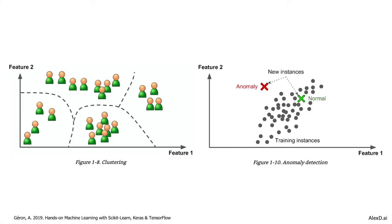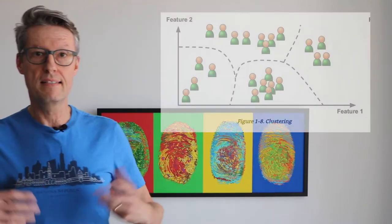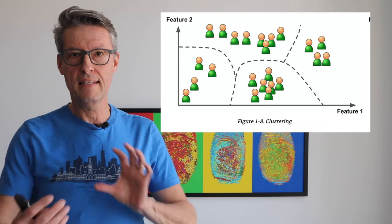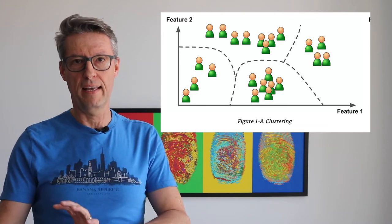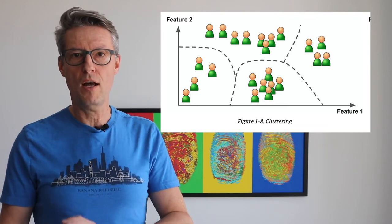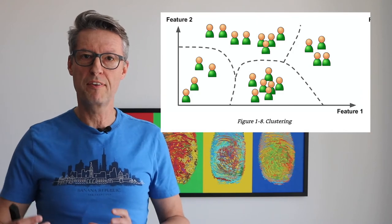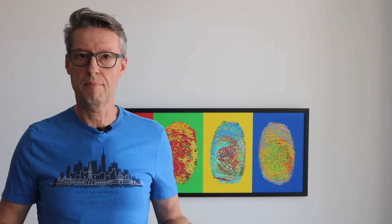Let's use two different examples. On the right side, what we have is a kind of cluster. We have a bunch of data, and we want to divide it into segments, into clusters. This kind of technique — clustering — is used a lot to define, for example, customer segments.